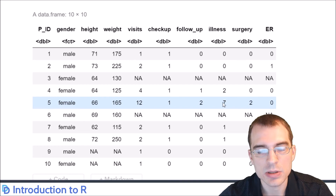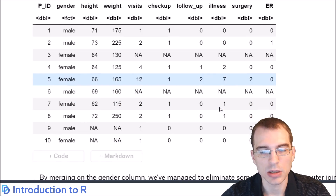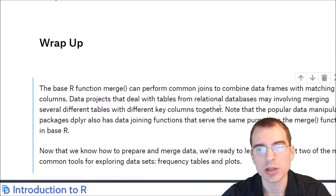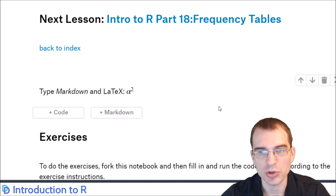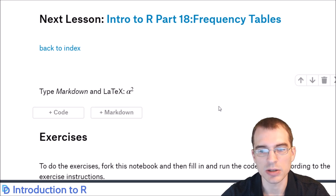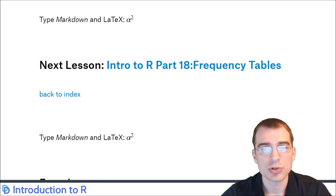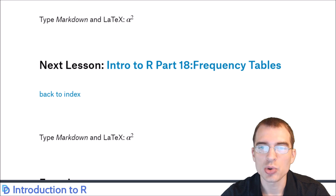That covers the basics of data merging and joining in base R. It's also possible to do joins using the dplyr package, which is a data manipulation library with dedicated functions like left_join and right_join. But the base R merge function can get the job done as well. In the next lesson, we'll go into frequency tables, a useful tool for exploring categorical variables. See you next time.